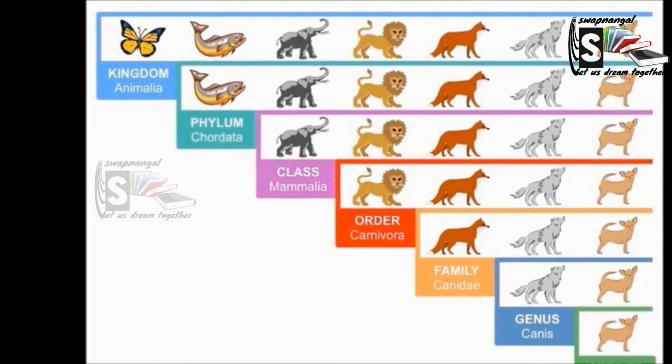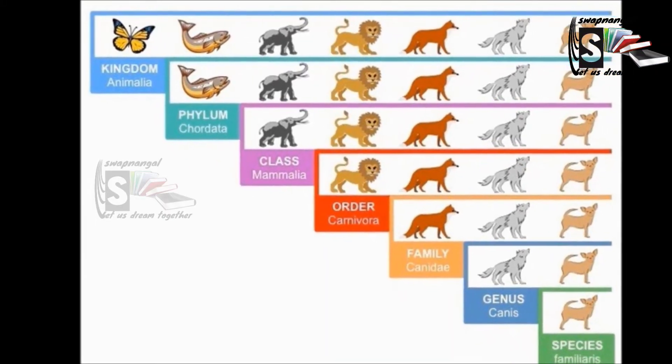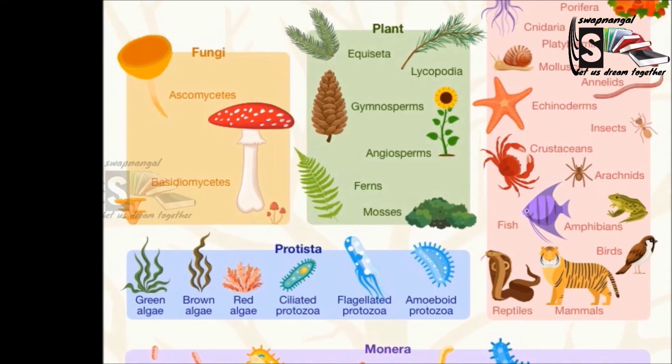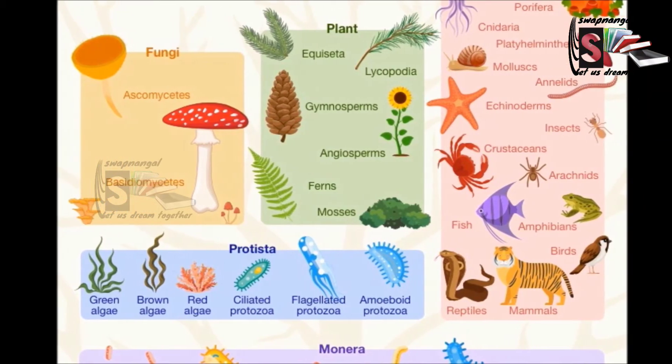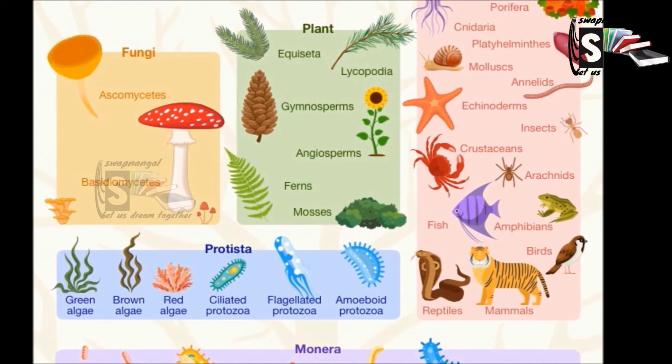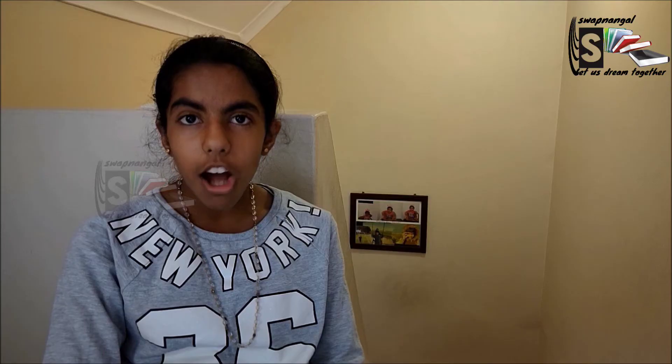To group the organisms, we must look at the important features or characteristics that are similar or that the organisms share. The science of classifying living organisms is called taxonomy. The most widely accepted classification system for classifying living organisms is divided into five main groups, which are called kingdoms. These are bacteria, protists, fungi, plants and animals.